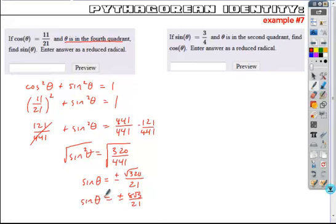And now it's either going to be positive or negative. The way that we can determine whether it is positive or negative is if we use this information. If theta is in the fourth quadrant, so down here, is our sine value positive or negative? Sine is the y, and the y in this quadrant is negative. So our answer is going to be negative 8 root 5 over 21.